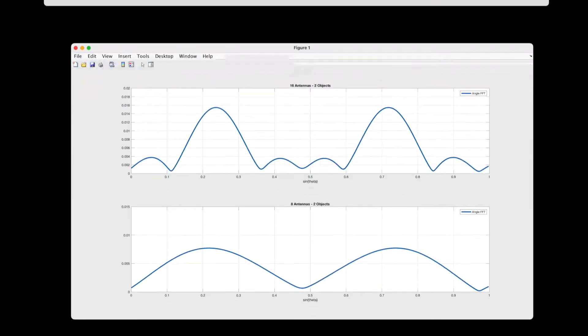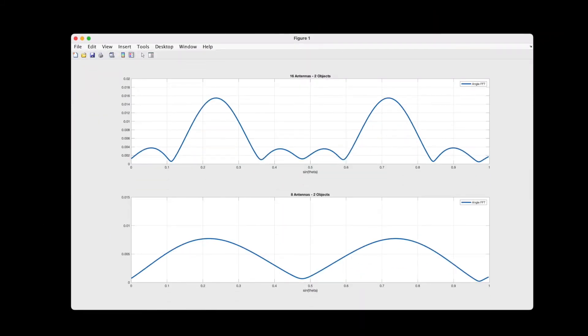Let me show you what this looks like in this example. I have two objects that are separated by about 30 degrees or so. The above plot shows the angle FFT of a radar system that uses 16 receive antennas, and it has these narrower peaks. The lower plot only uses eight, and has wider peaks. And you can see that in both cases, the two objects can be resolved, since there are two distinct peaks.